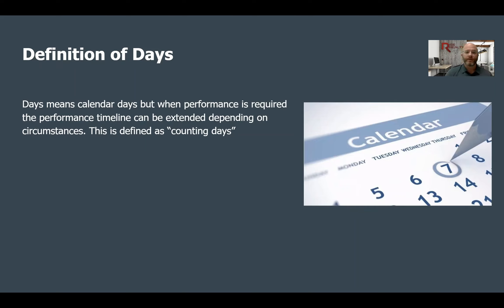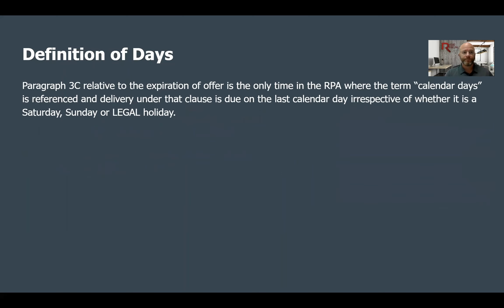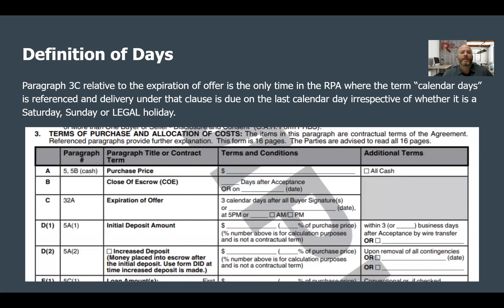With counting days, the day of acceptance is day zero and the next day is day one. So if you have a contract accepted today at any time, today would be day zero and tomorrow would be day one — that starts your timeline. Paragraph C relative to the expiration of the offer is the only time in the RPA where the term calendar days is referenced, and delivery under that clause is due on the last calendar day irrespective of whether it is a Saturday, Sunday, or legal holiday.